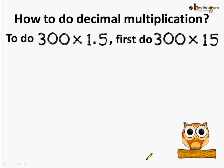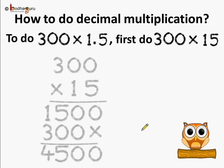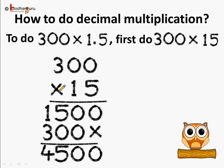Now, how are we going to do 300 multiplied by one point five? Let's keep the decimal point separate for a moment. Let's first do 300 multiplied by 15 — that is easy, that we learned in our last video. We put 300 multiplied by 15, take the first digit of the multiplier and multiply with the entire multiplicand, put a cross sign, then take the second digit of the multiplier and multiply with the multiplicand again, then add everything. So we get four thousand five hundred. When we did 300 multiplied by 15, without the decimal point, we got the product as four thousand five hundred.